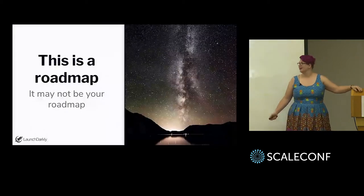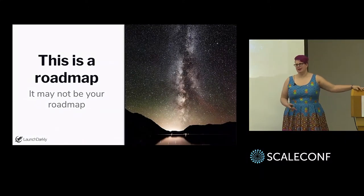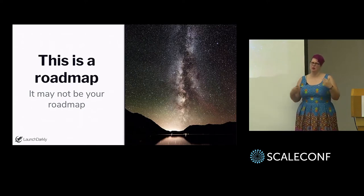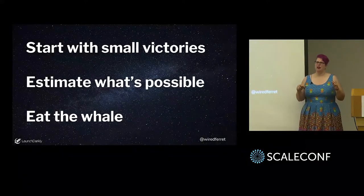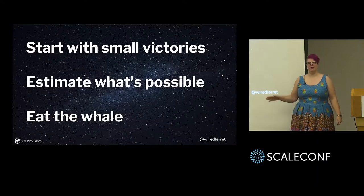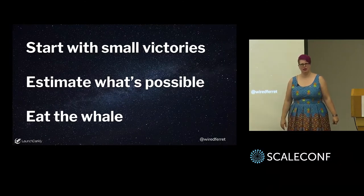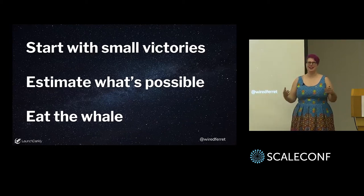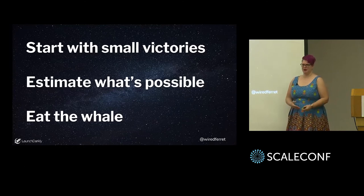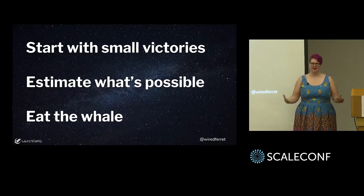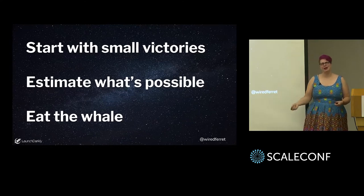So this is a roadmap for thinking about testing, microservices, and feature flags — it may not be your map, but it is a way to think about it. Start with small victories. I don't want you to go home and throw out all your test suites — that's not what I'm saying. You should not stop testing, but you should test smarter. Think about what your tests are trying to produce. Estimate what's possible for you to accomplish. What is your architecture trying to do? Is that something you can accomplish? And then, bite by bite, you eat the whale. Most of us are not in a position to completely rewrite our code base — we have to live with it. But that doesn't mean we have to live with it in the state that it's in. We can change things gradually.